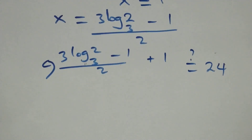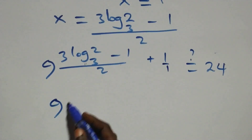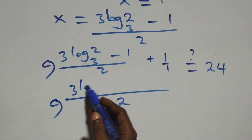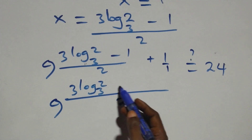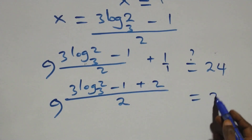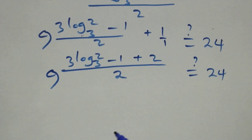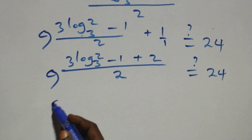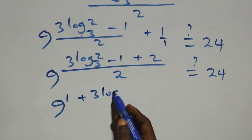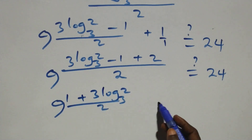We bring the exponent together: nine raised to the power of three log two base three minus one, all over two, then plus two over two. Simplifying, two minus one is one, so we get nine raised to the power one, plus three log two base three, all over two. Does this equal twenty-four?